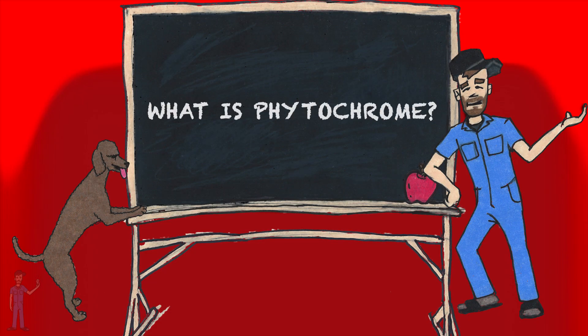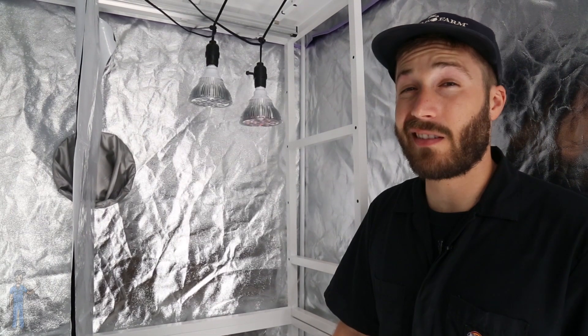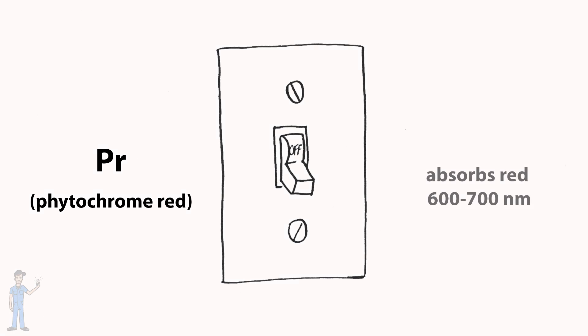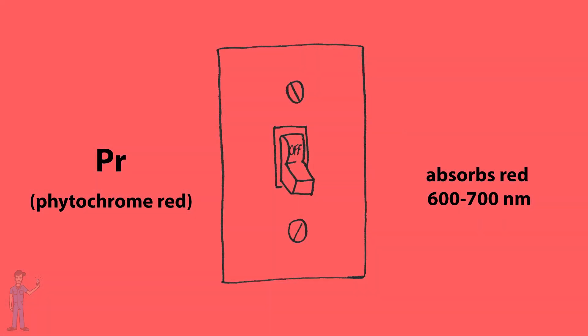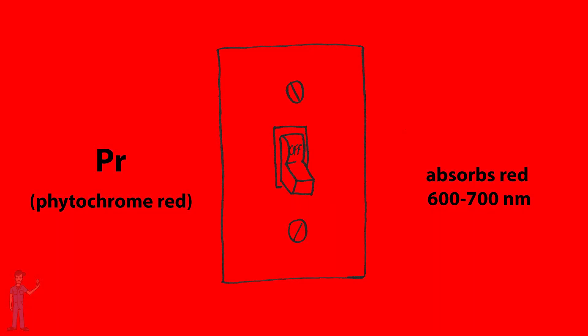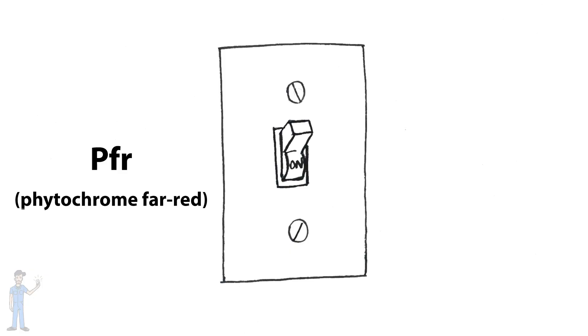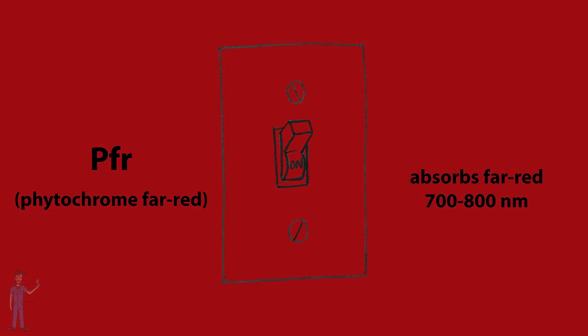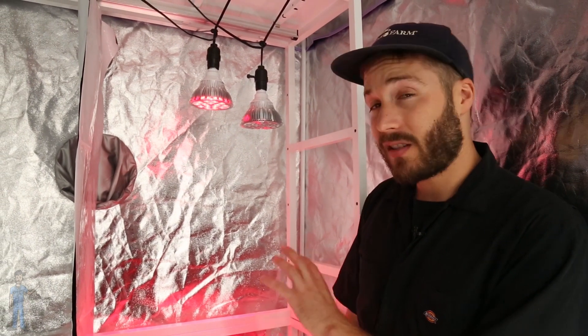Phytochrome is like a light switch — it has an on and an off position. We start in the off position, called PR or phytochrome red. In the PR form it absorbs red light, and when it absorbs red light it switches forms into PFR, which is the active form and stands for phytochrome far red.